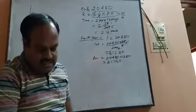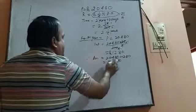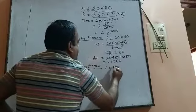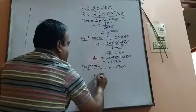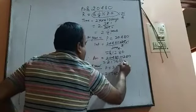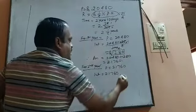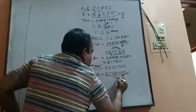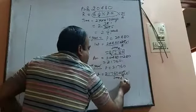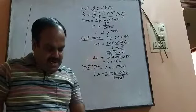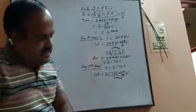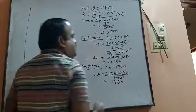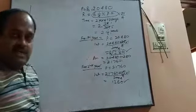This amount of 21,760 becomes the principal for the second year. The interest for the second year is 21,760 into rate into time, where time is 1 year, upon 100. With rate 25 by 4, on simplification the compound interest for the second year comes as 1,360. So the compound interest for the first year is 1,280 and the compound interest for the second year is 1,360.